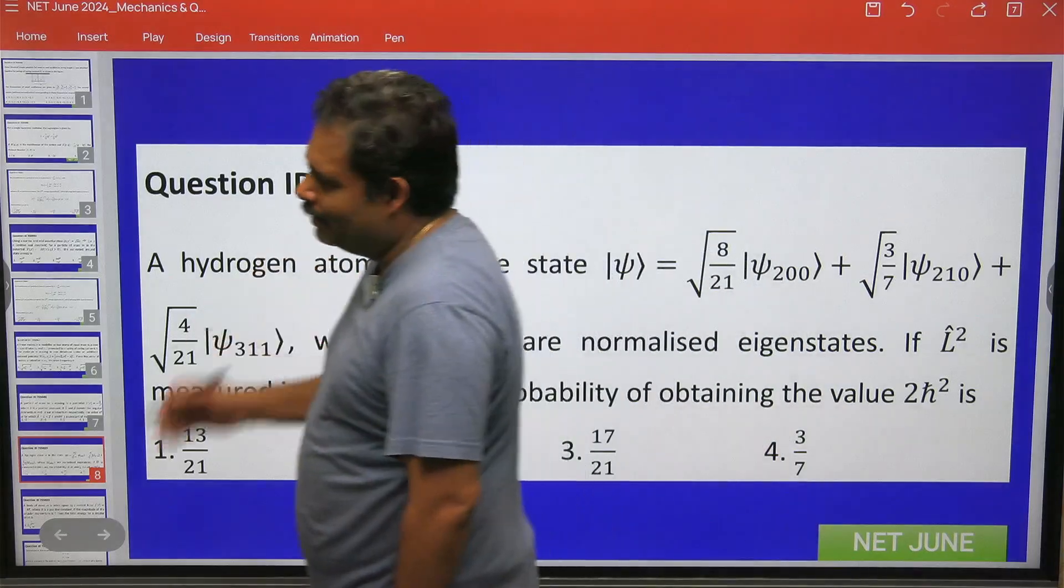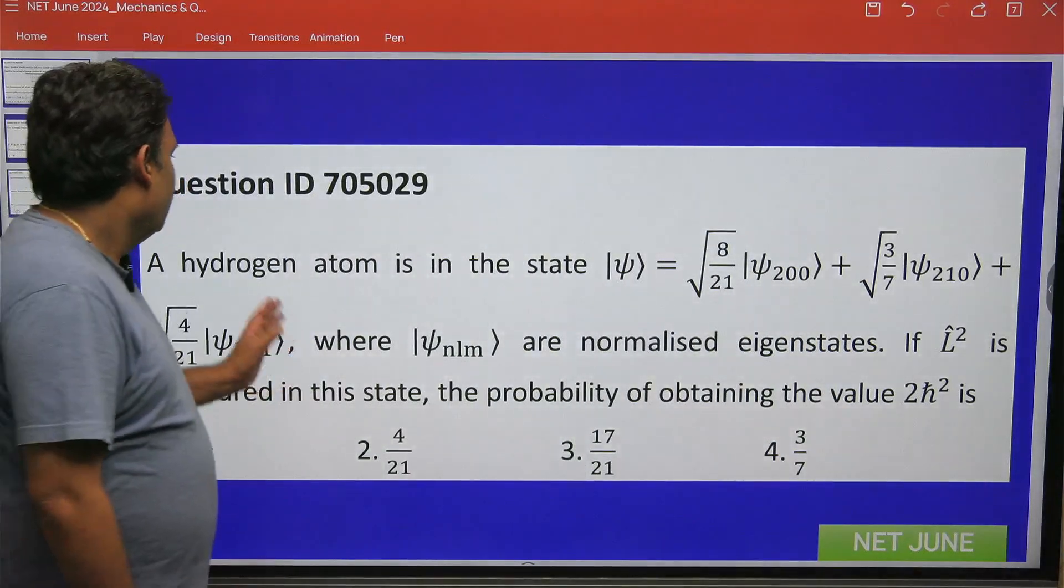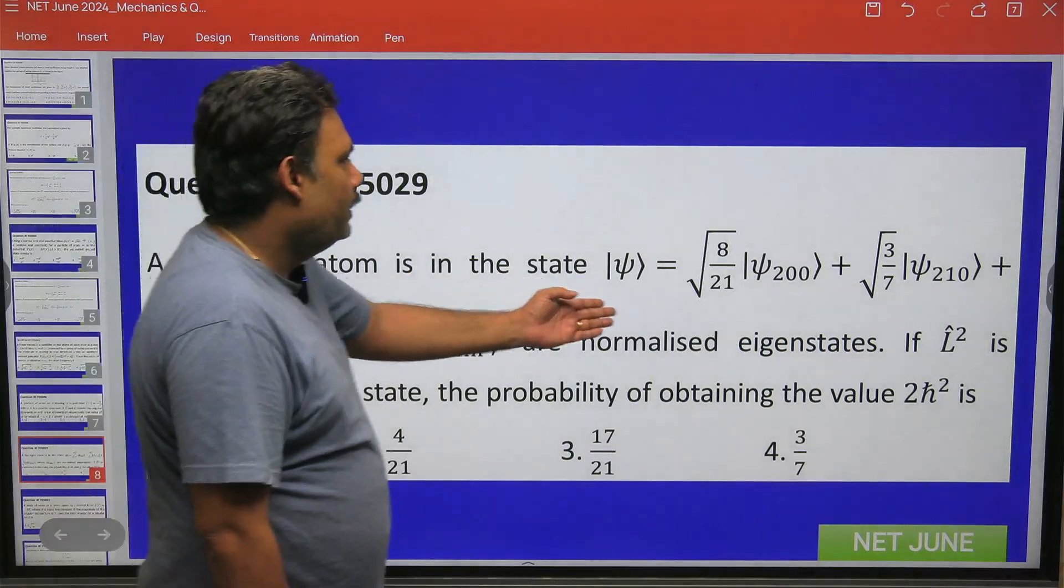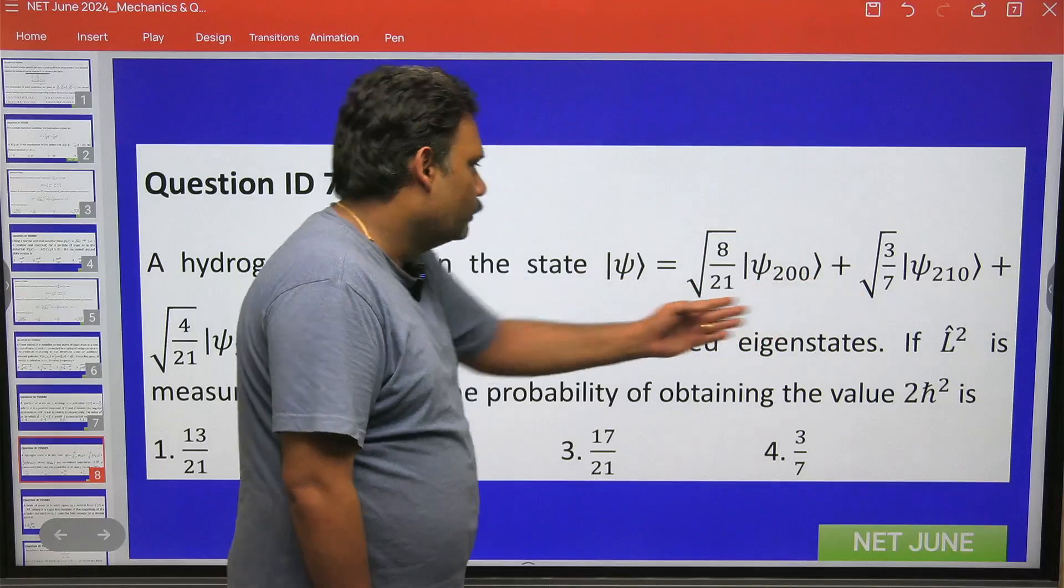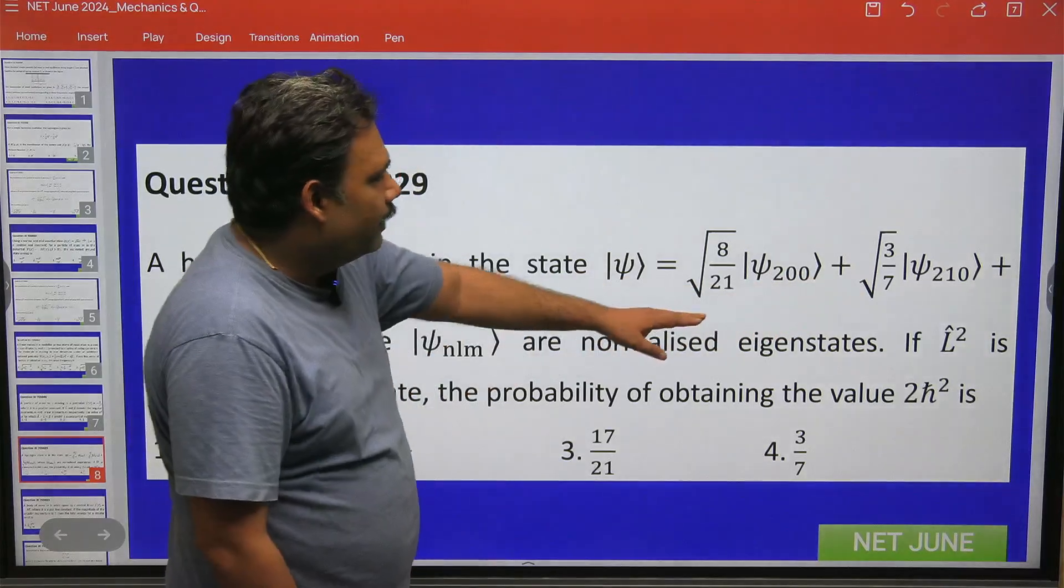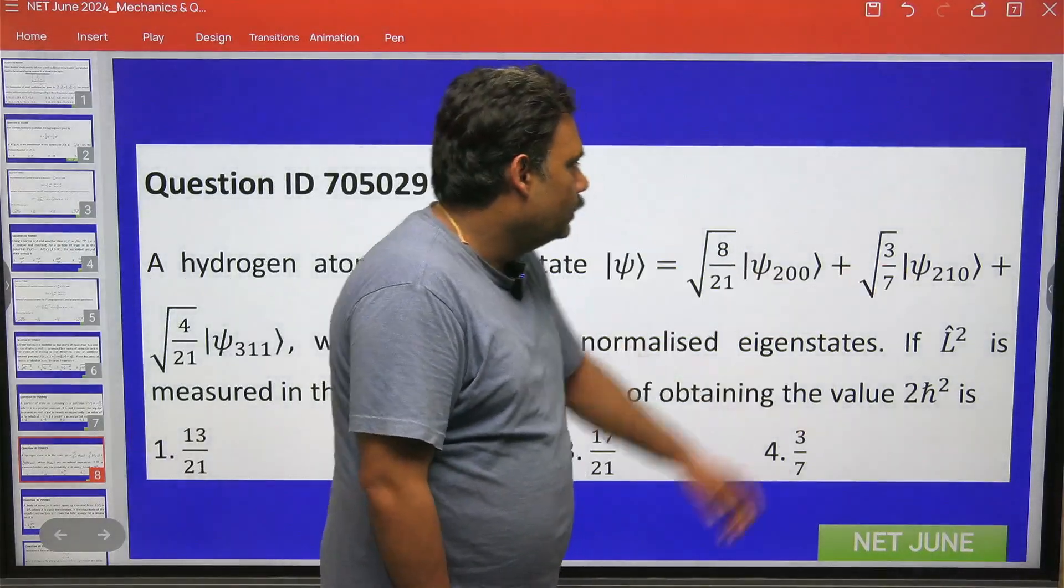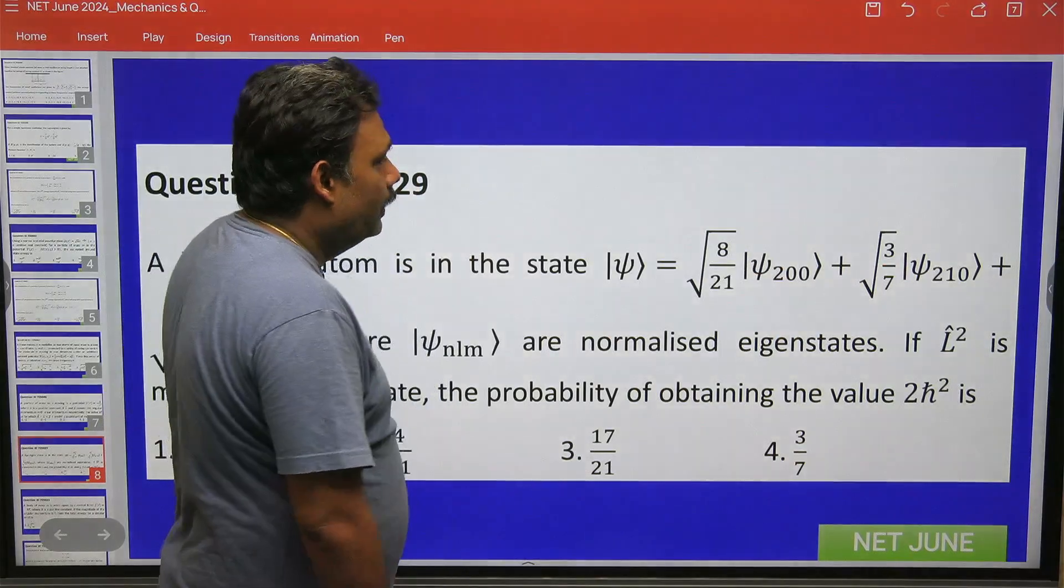So this is a straightforward question just based on concept. There is a hydrogen atom in a state that will be given as some superposition of states, and they are from n equals 2, n equals 2, and n equals 3 here.